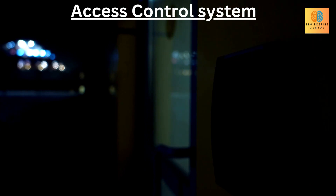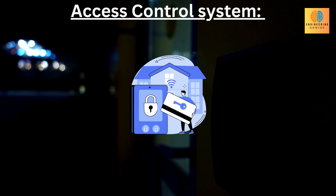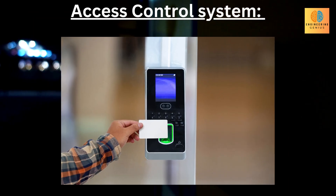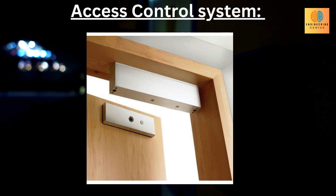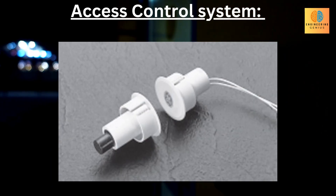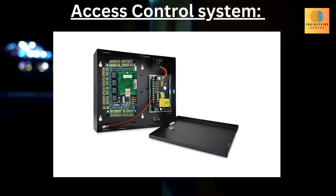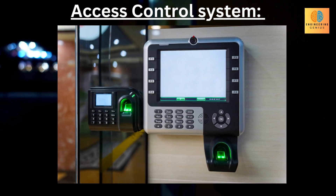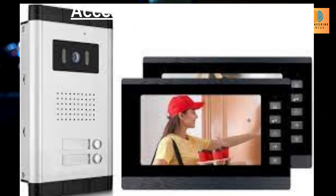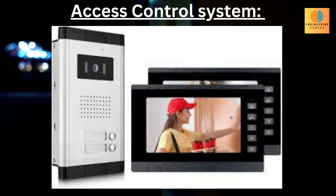Access control system falls under ELV systems, either it is for a building or a plant. Components of access control systems are: entry/exit card readers, door magnetic locks, door status switch, access controller, break glass unit or a push button, biometric card reader and video intercom.